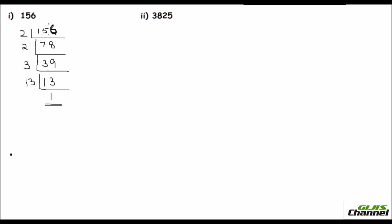So 156 I can write as the product of prime numbers. Just write all these numbers alone. 2 times 2 times 3 times 13. Or you can also write it as 2 squared times 3 times 13. You can find all these numbers are prime numbers.